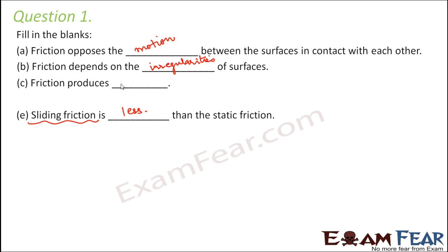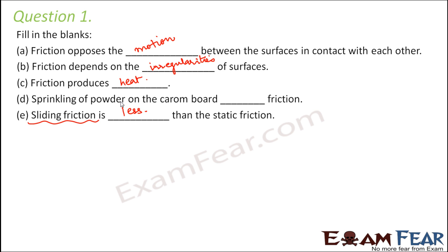Friction produces dash — friction produces heat, and that is why it leads to a lot of energy loss. Sprinkling of powder on the carom board dash friction. When you sprinkle powder on the carom board, the surface becomes slippery because friction is reduced — so this reduces friction.